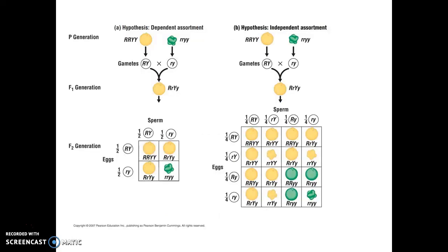With strict dependent assortment — capital R and capital Y always together, little r and little y always together — in the F2 generation we'd expect three quarters of offspring to be round and yellow, and one quarter to be wrinkled and green, similar to what we see in a monohybrid cross. Conversely, if independent assortment occurred, we'd expect more options: round and yellow, wrinkled and yellow, round and green — combinations not seen in previous generations. With independent assortment, only one sixteenth of offspring would be wrinkled and green, whereas dependent assortment predicts one quarter.